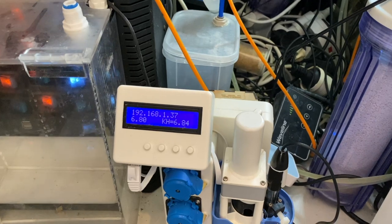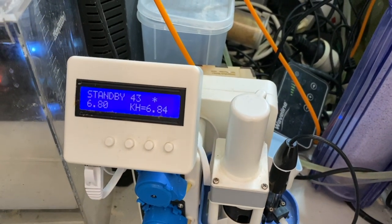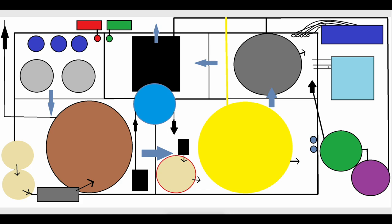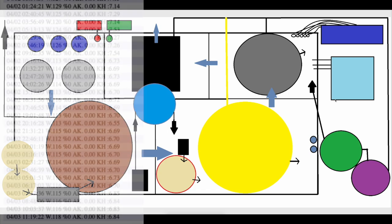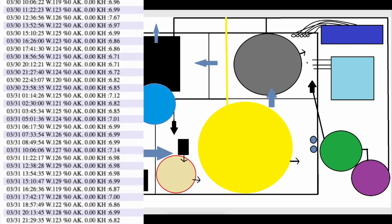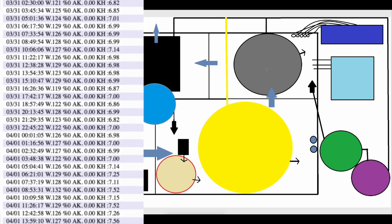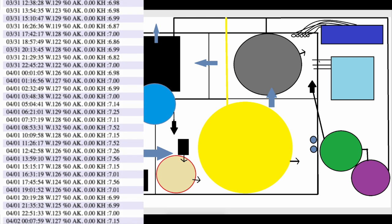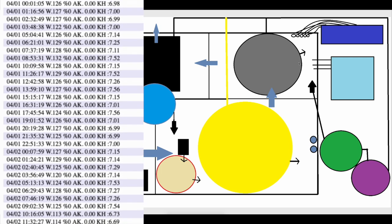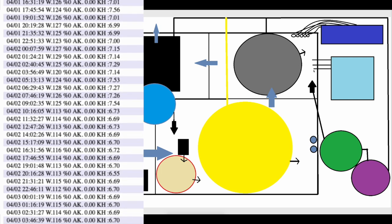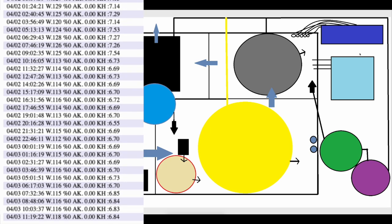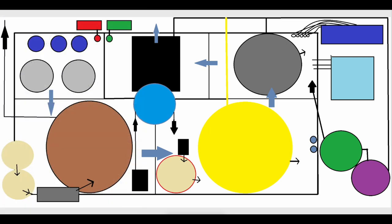That's my KH Guardian that automatically tests alkalinity every hour. I have that testing alkalinity every hour, and at the moment, I don't have it making any adjustments. I have had it before make some adjustments to my calcium reactor. I have had it dosing alkalinity on its own, but at the moment, I find that I've got it dialed in well enough that I don't actually need to use it as a controller. I just use it as a monitor, particularly when you're testing that frequently.